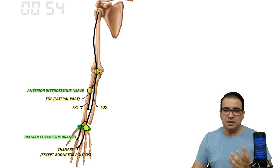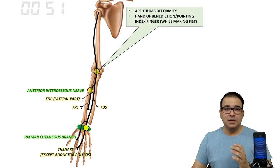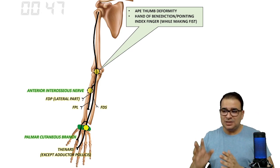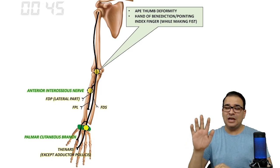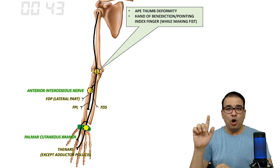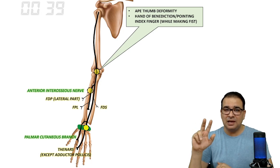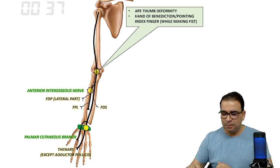In higher median nerve injury, there will be ape thumb deformity because the thenar muscles are involved. Also, because radial side flexors are involved, there will be either pointing index finger or hand of benediction while making a fist.